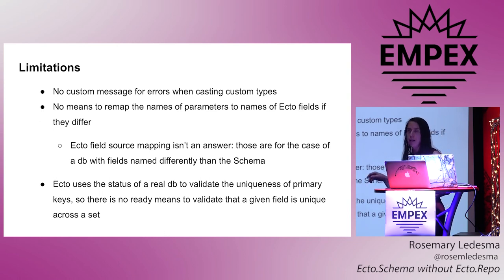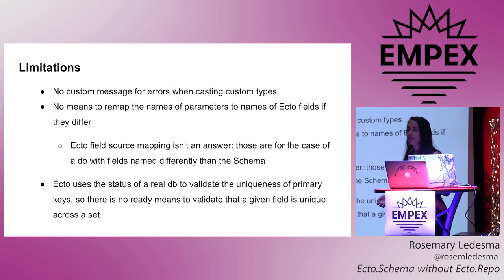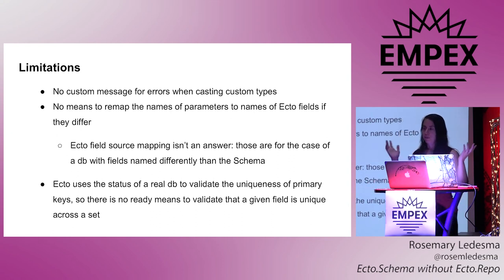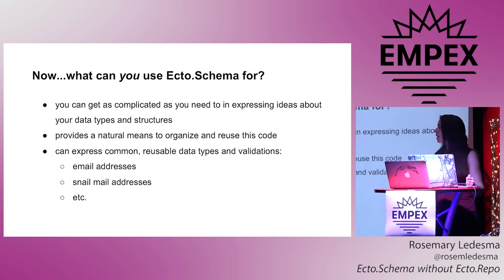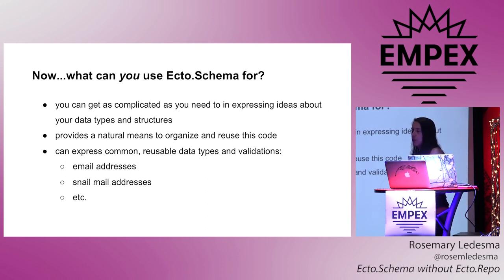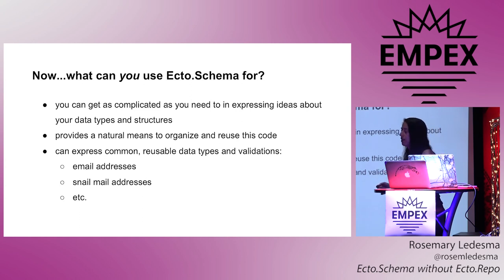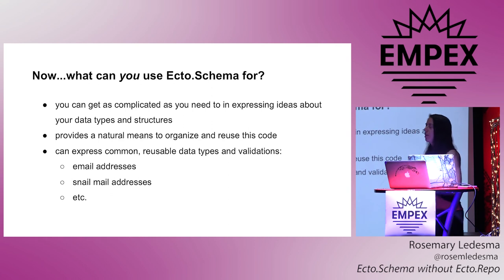Part of what's so great about changesets is you can do a lot with them — manually add errors, insert data in stages. It doesn't have to be the simple several-step process in my app. It's a very sophisticated library with a lot of options. Think about what you could do with Ecto schema: it supports you as you express really complicated ideas about data types and data structures, and provides a very intuitive way to organize these ideas. If you've got an email address or a snail mail address or anything else, you can express that idea once and reuse it as needed. It's very natural to use this library to explain things that way.